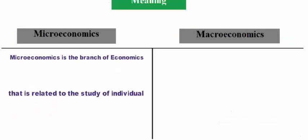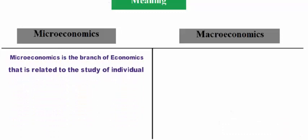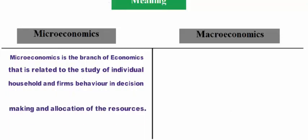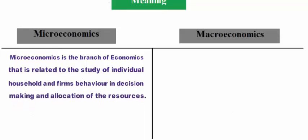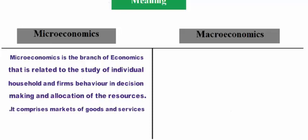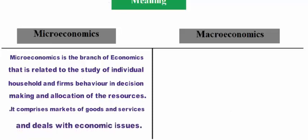Top seven differences between microeconomics and macroeconomics. First: Meaning. Microeconomics is the branch of economics related to individual household and firm's behavior in decision making and allocation of resources. It comprises markets of goods and services and deals with economic issues.